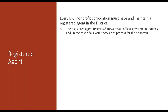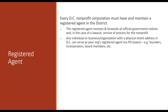Every DC corporation must have and maintain a registered agent in DC. The registered agent is the person and the address officially listed to receive government notices — and even in the case of a lawsuit where a process server needs to find your nonprofit. The district doesn't want ghost organizations that can't be found or sued. Any individual or business with a physical street address in DC can serve as a registered agent — no PO boxes. Commonly it's a founder's home address or a board member.